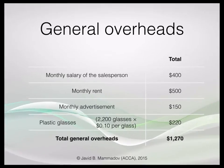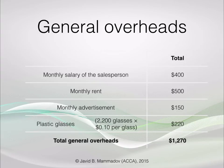General overheads are also shared costs. What distinguishes them from production overheads is that they have nothing to do with production, but are still necessary for the business. Examples include the monthly salary of the salesperson — a portion of which must be included in the price of every glass of juice sold — as well as monthly rent, advertisement, and plastic glasses. The only difference from production overheads is that these costs do not relate to the production process.